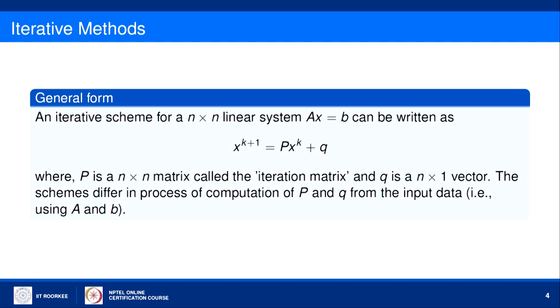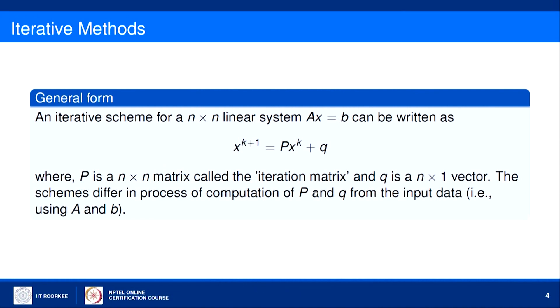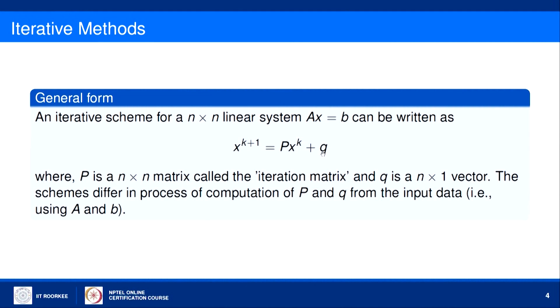A general form of an iterative method for solving an N×N linear system Ax = B can be written as: x_{k+1} = P·x_k + Q, where x_{k+1} is the approximation at iteration k+1, P is an N×N iteration matrix, and Q is an N×1 vector. From the input data — the coefficient matrix A and the right-hand side vector B — we compute the iteration matrix P and vector Q, then use this iterative process to find the sequence of approximations.